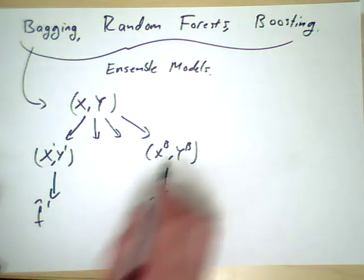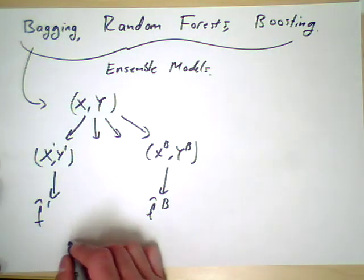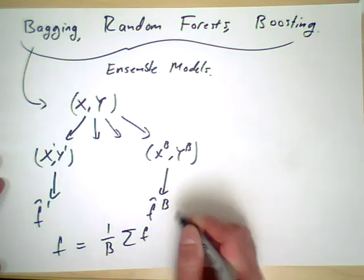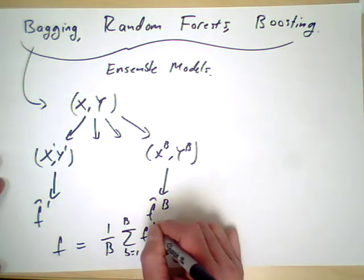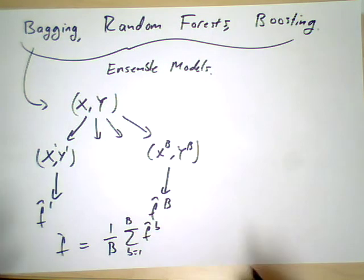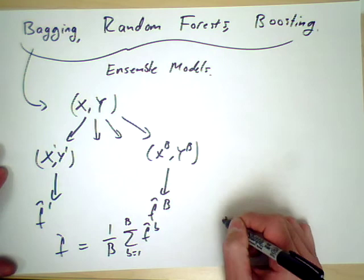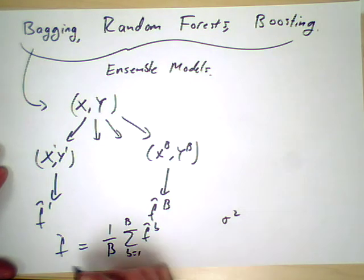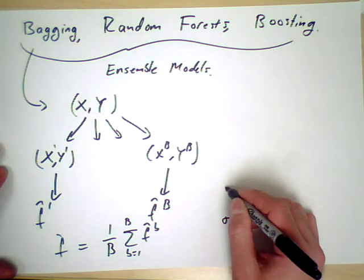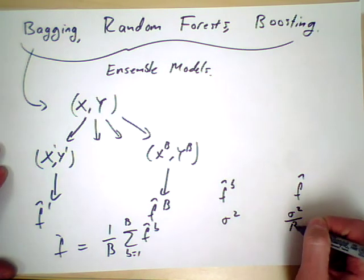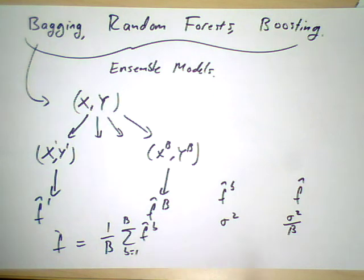Assuming these are all the same size bootstrap sample, we simply make f to be 1 over B, the sum of the f B's. So it's literally the average. The idea here is that if each of these models has a certain variance sigma squared, then f hat should have variance sigma squared over B, because if these are equally identically distributed independent random variables and you average them, the variance goes down by that factor.